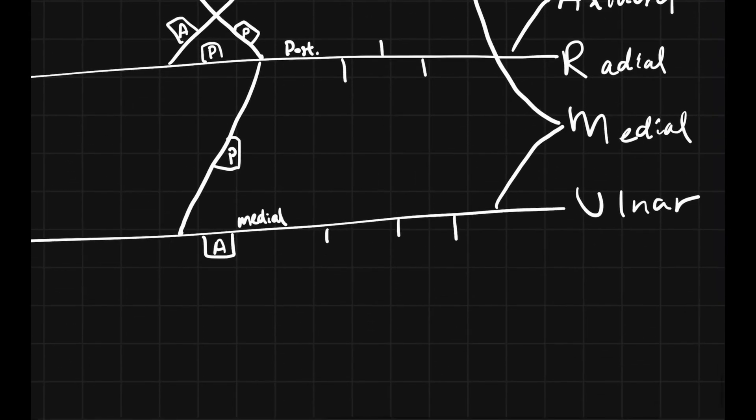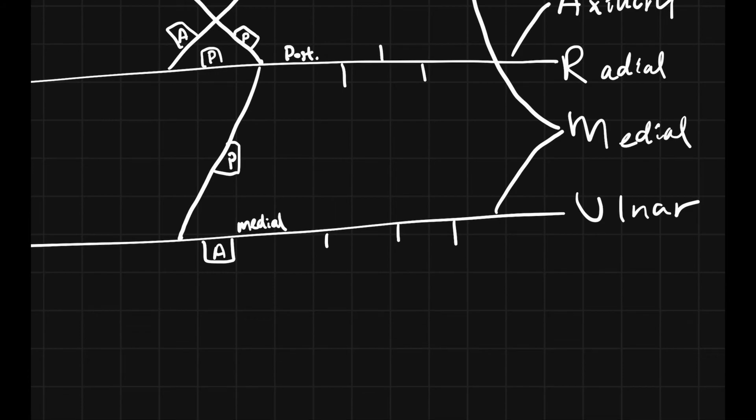On your medial cord it's the easiest way to remember it because every single nerve starts with an M. You're going to have your medial pectoralis nerve, you're going to have your medial brachial cutaneous nerve, you're going to have your medial antebrachial cutaneous nerve. It's easy to remember because it's just two, three, four.